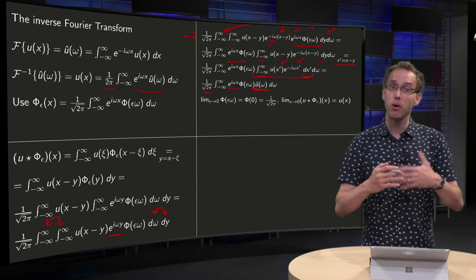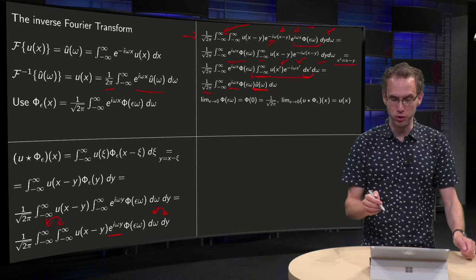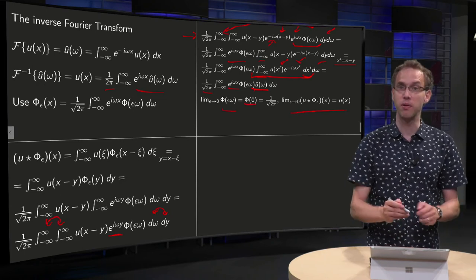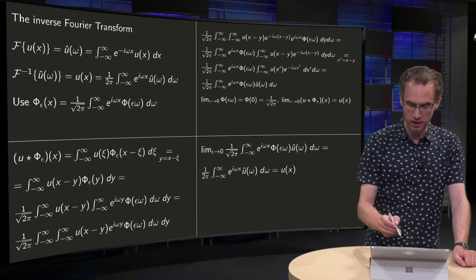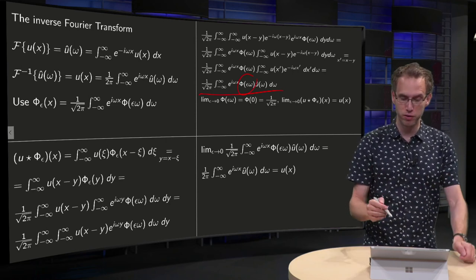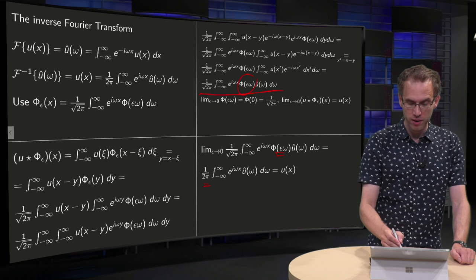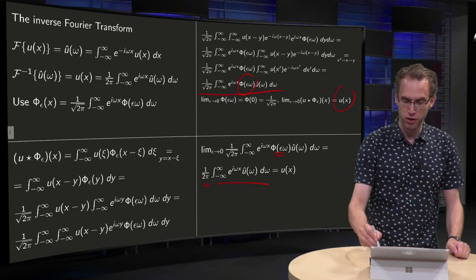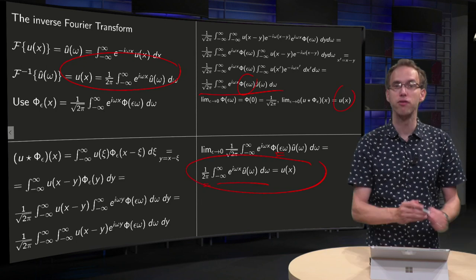To remove φ(εω), we take the limit ε→0. Taking this limit, the left-hand side gives the convolution of u with the delta function, which equals u(x). On the right, φ_ε(ω) evaluated at ε→0 just becomes φ(0) = 1/√(2π). Combined with the existing 1/√(2π), we get 1/(2π). So the result is (1/(2π)) times the integral of e^(iωx) û(ω) dω equals u(x) — exactly the Fourier inversion formula.